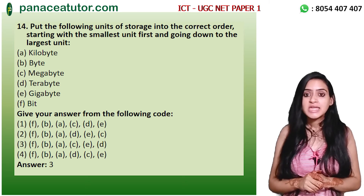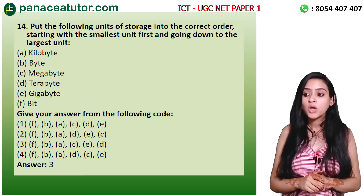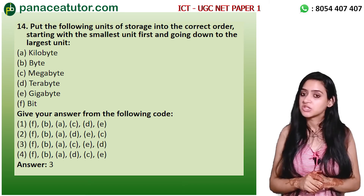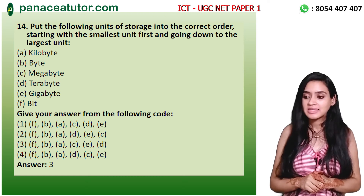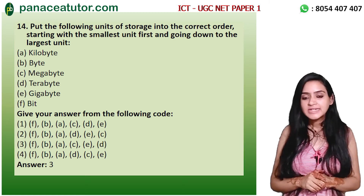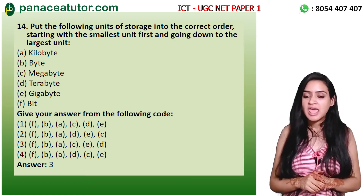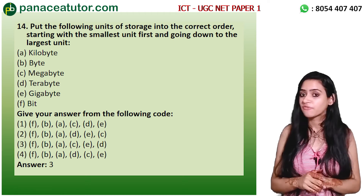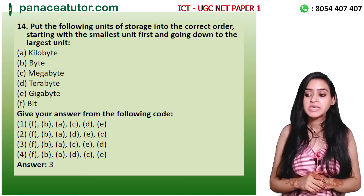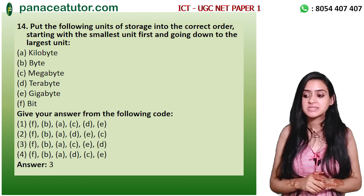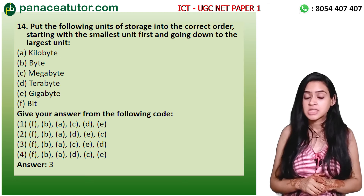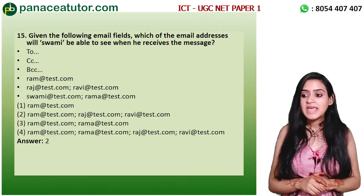The next question is related to arrangement of storage units. Put the following units of storage into the correct order starting with the smallest unit first: A: Kilobyte, B: Byte, C: Megabyte, D: Terabyte, E: Gigabyte, F: Bit. The codes given are evaluated and the correct answer is Code 3 — F, B, A, C, E, D — that is Bit, Byte, Kilobyte, Megabyte, Gigabyte, Terabyte.